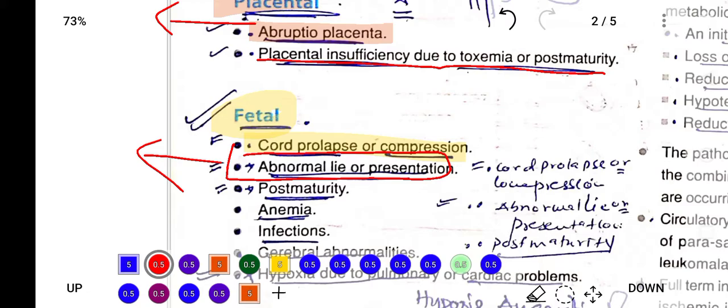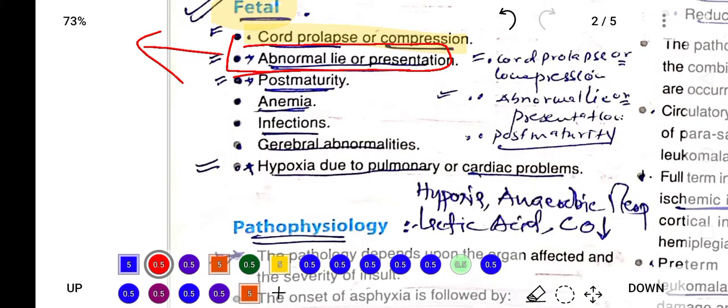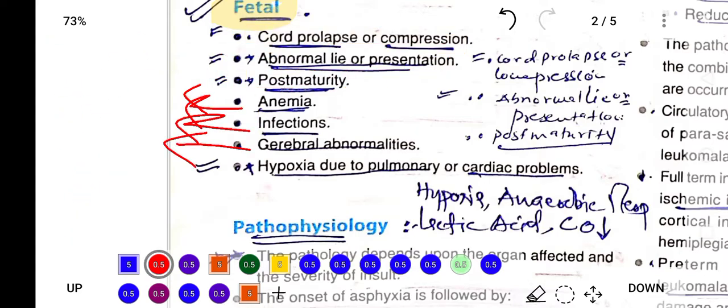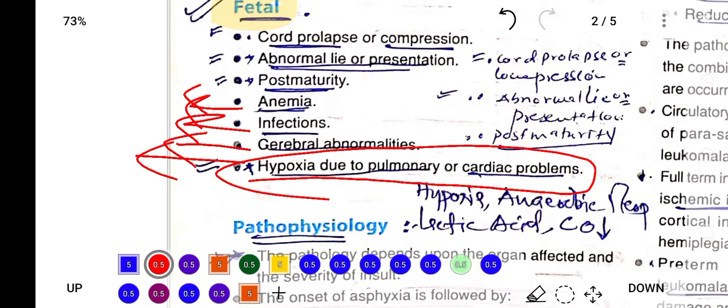The fetal causes include cord prolapse, abnormal lie or presentation of the baby, abnormal position, pre or post-maturity, and anemia. If a baby is anemic, decreased RBC will lead to decreased oxygen supply and asphyxia can occur. That is the pathophysiology behind anemia and birth asphyxia. Other causes include infections, cerebral abnormality, and hypoxia due to pulmonary or cardiac problems.